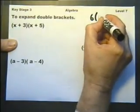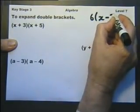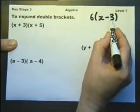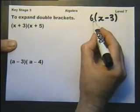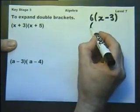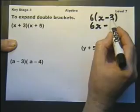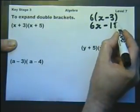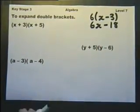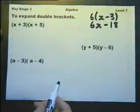If you see something outside of a bracket, it means you have to multiply everything inside by what's outside. In other words, you have to multiply the 6 by the x and the 6 by the minus 3. So in this case, outside the bracket of x plus 5 is both the x and the 3.